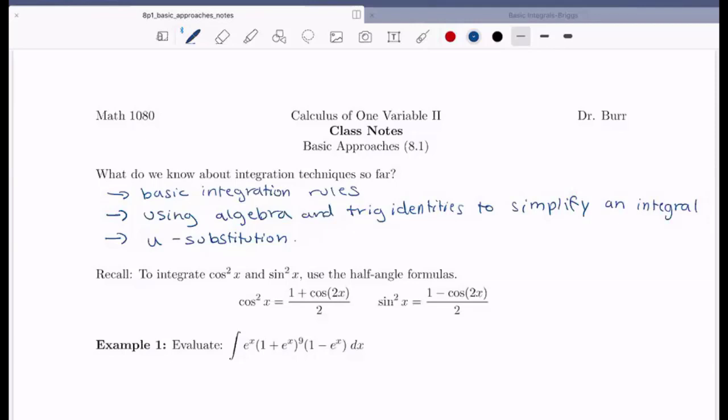One set of formulas here that I wanted us to review first were just the half angle formulas for cosine squared and sine squared that are useful if we want to integrate cosine squared or sine squared functions. So cosine squared has this formula being equal to 1 plus cosine of 2x all over 2 and sine squared x is 1 minus cosine 2x over 2.